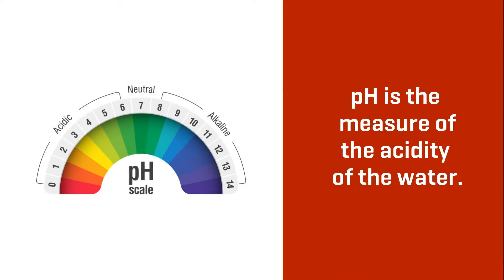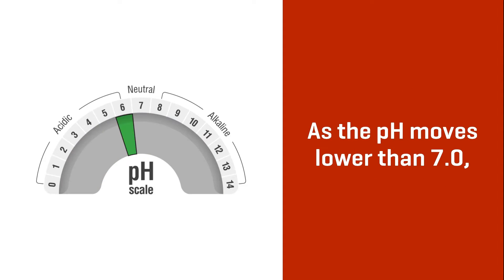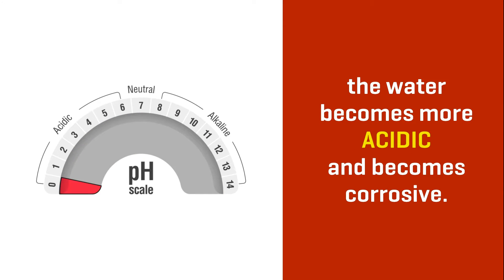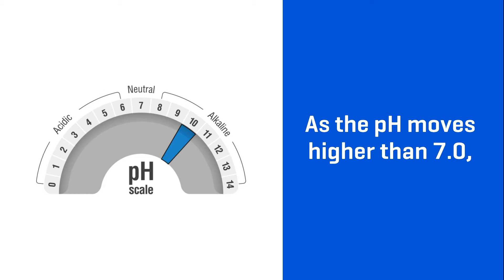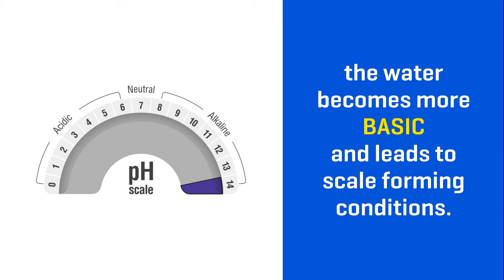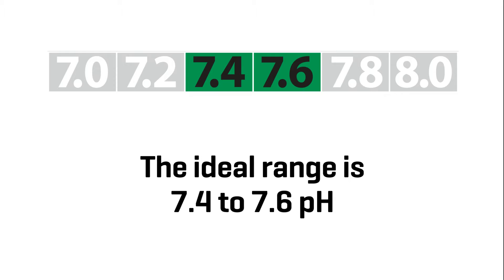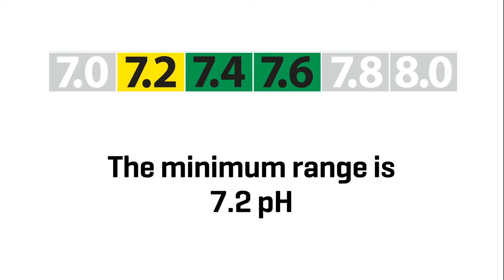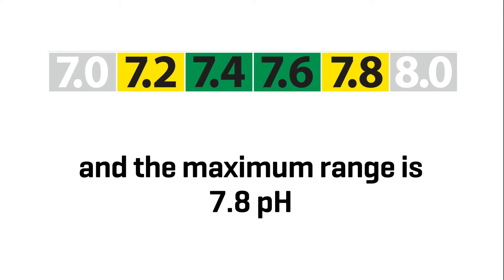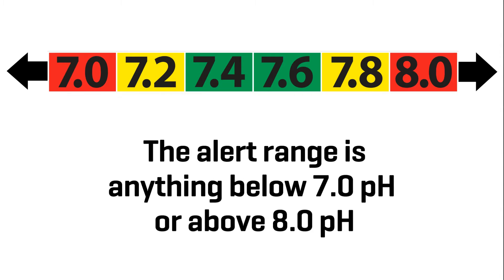pH is a measure of the acidity of the water. As the pH moves lower than 7.0, the water becomes more acidic and becomes corrosive. As the pH moves higher than 7.0, the water becomes more basic and leads to scale-forming conditions. The ideal range is 7.4 to 7.6 pH. The minimum range is 7.2 pH, and the maximum range is 7.8 pH. The alert range is anything below 7.0 pH or above 7.8 pH.